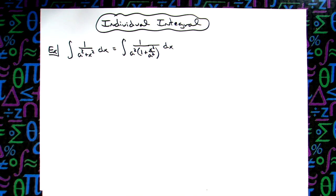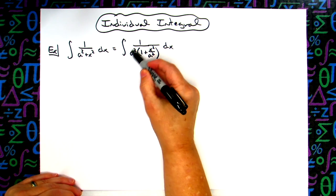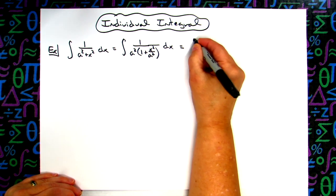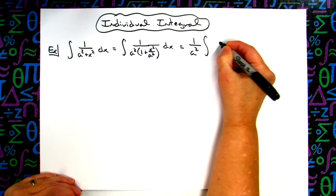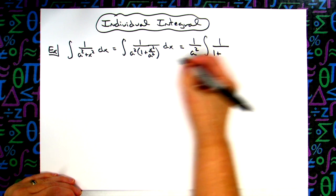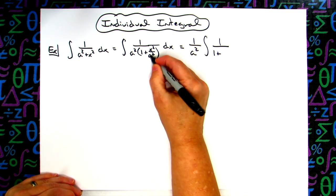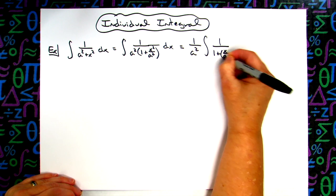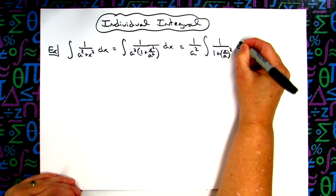All right, now from here I can take the 1 over a squared and just pull it out in front of the integral. So 1 over a squared integral of 1 over 1 plus, I'm going to use laws of exponents on this and raise it to the second power, so x over a quantity squared dx.